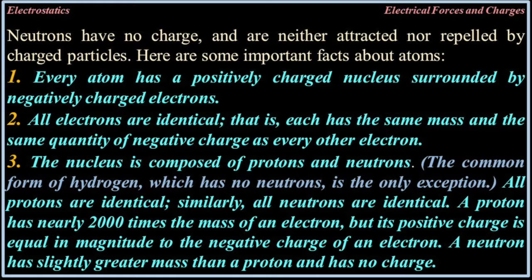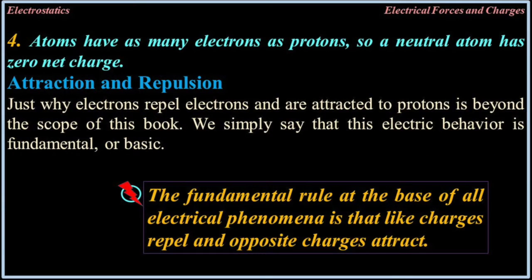Here are some important facts about atoms. Every atom has a positively charged nucleus surrounded by negatively charged electrons. All electrons are identical — each has the same mass and the same quantity of negative charge as every other electron. The nucleus is composed of protons and neutrons; the common form of hydrogen, which has no neutrons, is the only exception. All protons are identical. A proton has nearly 2,000 times the mass of an electron, but its positive charge is equal in magnitude to the negative charge of an electron. A neutron has slightly greater mass than a proton and has no charge. Atoms have as many electrons as protons, so a neutral atom has zero net charge.